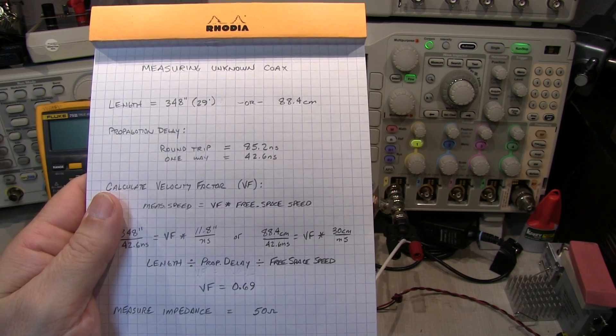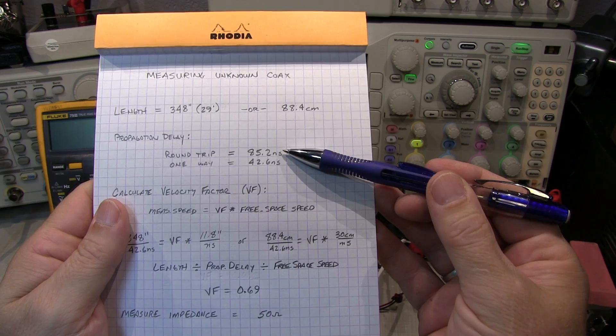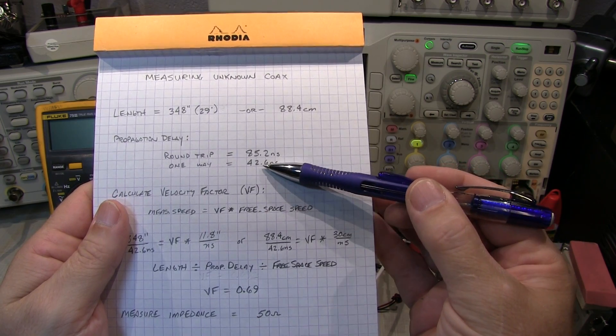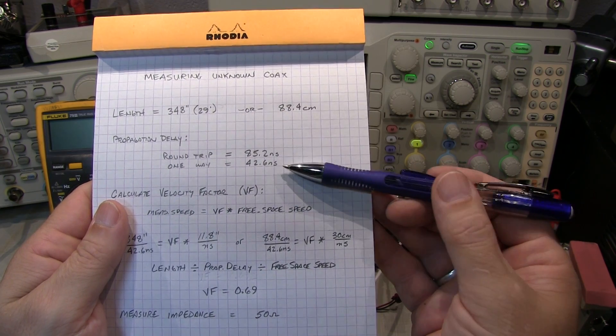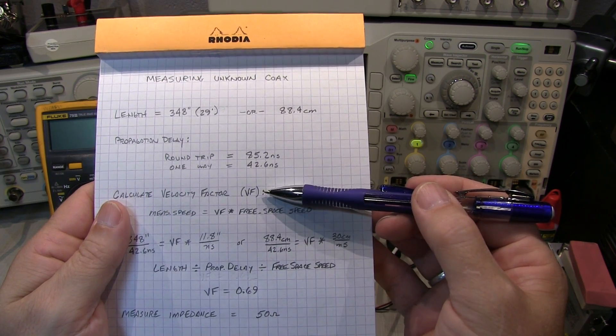So now that we know the round-trip delay is 85.2 nanoseconds, we just divide that by two and we know the propagation delay from one end of the cable to the other is 42.6 nanoseconds. So now we know enough to calculate the velocity factor.